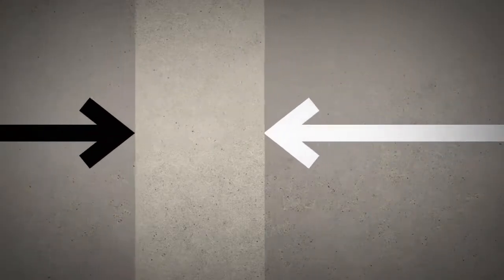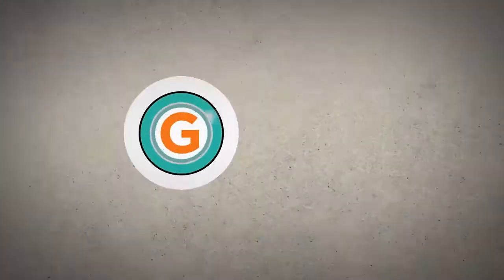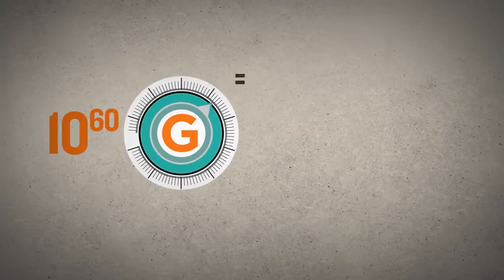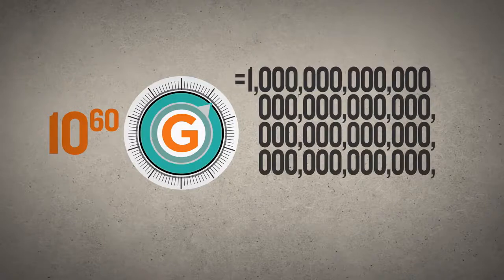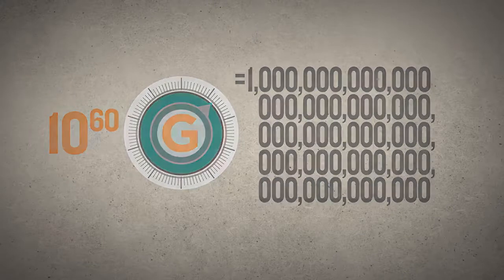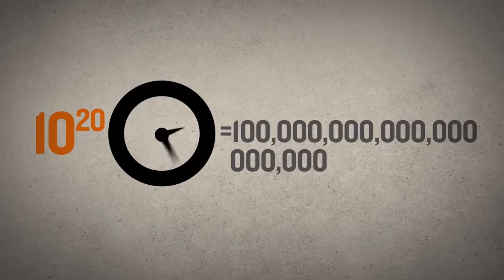To understand how exceedingly narrow this life-permitting range is, imagine a dial divided into 10 to the 60th increments. To get a handle on how many tiny points on the dial this is, compare it to the number of cells in your body, or the number of seconds that have ticked by since time began.